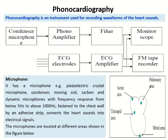The basic block diagram of phonocardiography is represented here. Phonocardiography is an instrument used for recording waveforms of heart sounds. It consists of four parts: the first is a condenser microphone — a mechanism which converts sound into electrical energy; the next is a phono amplifier; the third is a filter; and the fourth is a monitor or oscilloscope. A similar arrangement is followed for electrocardiography, where instead of a condenser microphone and phono amplifier, ECG electrodes and corresponding amplifiers are used, with output recorded on tape.